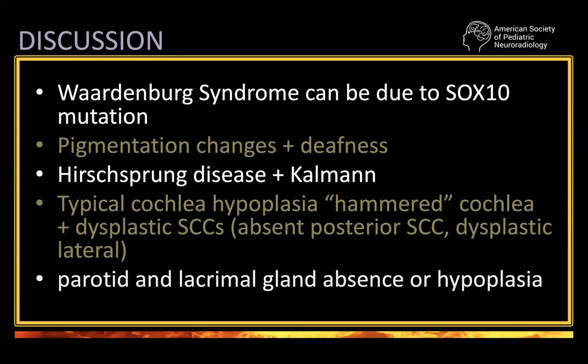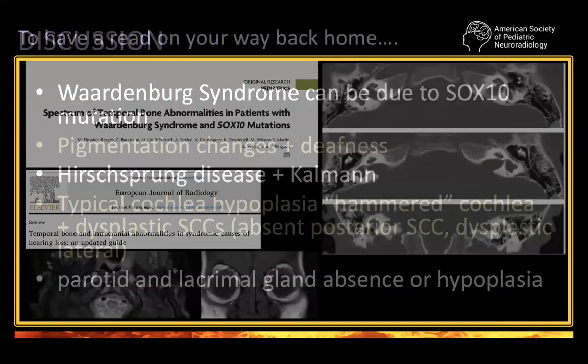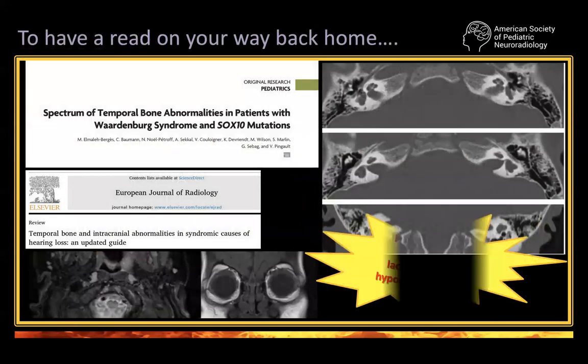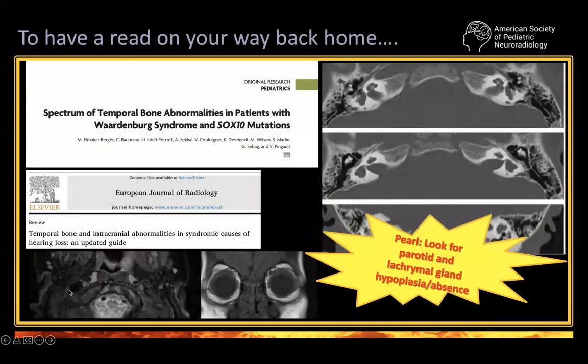Remember, though, that you can look at other parts. In particular, if you have a doubt for SOX10, look for parotid and lacrimal gland absence — like in these cases — or hypoplasia. These are two papers you can look at for reference.